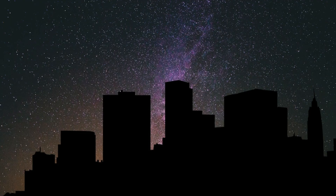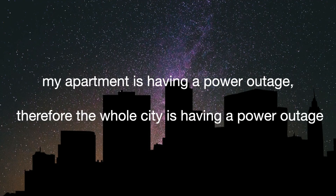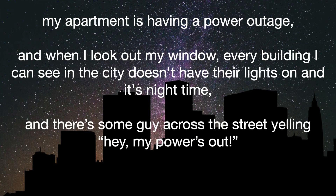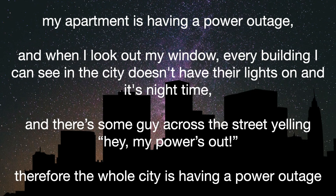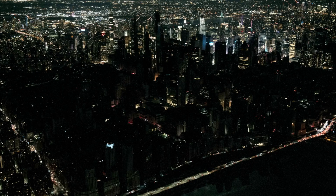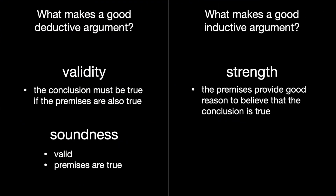The argument 'my apartment is having a power outage, therefore the whole city is having a power outage' is a weak argument — you only have one example to support your claim. But the argument 'my apartment is having a power outage, and when I look out my window every building I can see doesn't have their lights on, and it's nighttime, and there's some guy across the street yelling that his power's out — therefore the whole city is having a power outage' is a much stronger argument. However, it still doesn't guarantee that the conclusion is true. And just like soundness for deductive arguments, an inductive argument is cogent when the argument is strong and the premises are actually true.